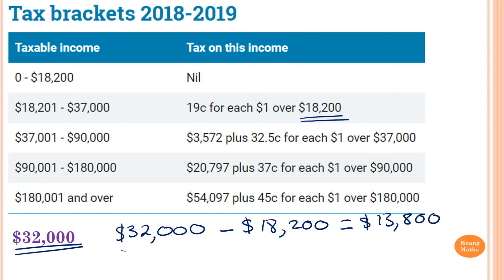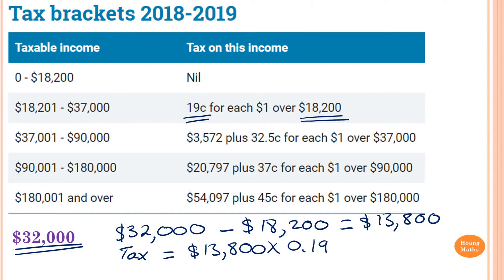So now tax is equal to — every dollar I need to pay $0.19 — so that's $13,800 times 0.19, because every dollar we need to pay $0.19. So that is equal to $2,622.